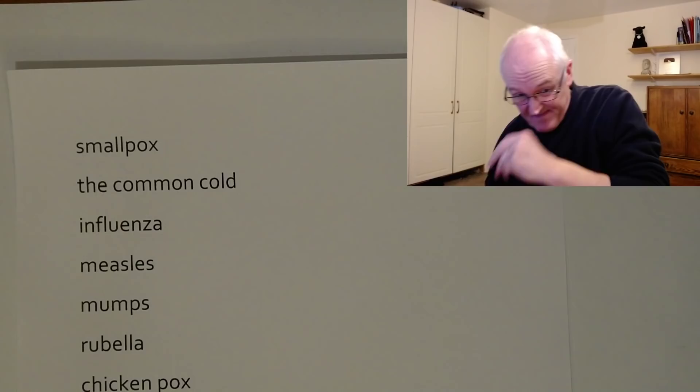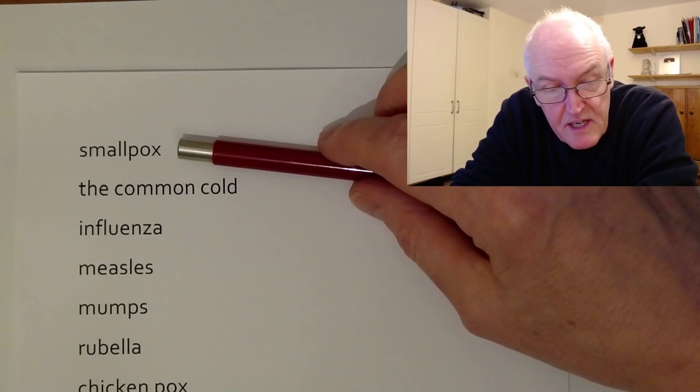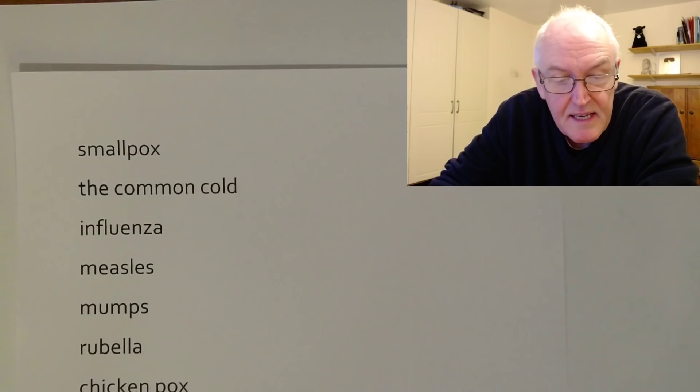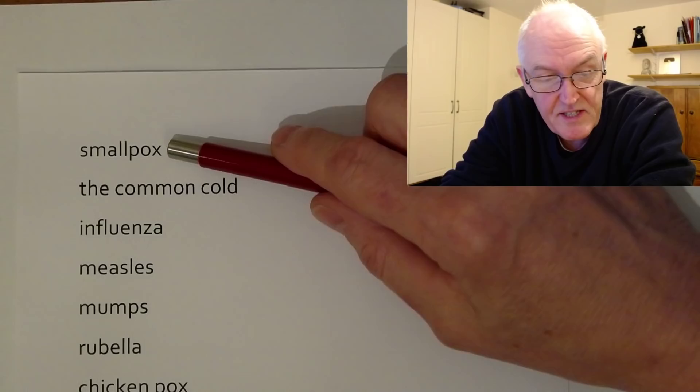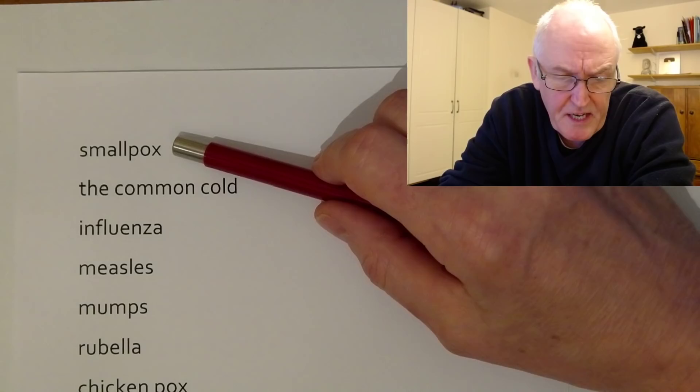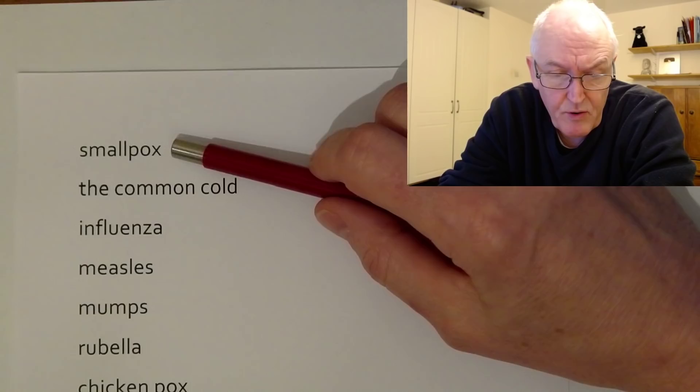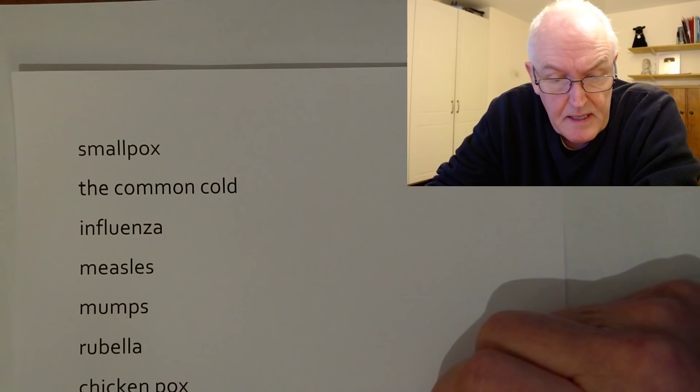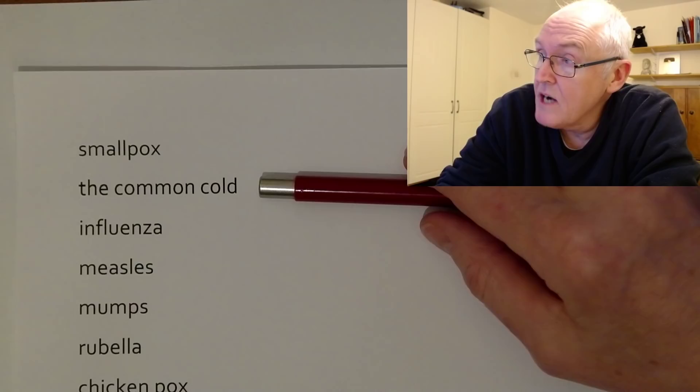Here are some other viral diseases. Smallpox — famously vaccinated against by Edward Jenner. It devastated the populations of South America and North America when Europeans first arrived. Quite an appalling virus, but I'm delighted to say it has been eradicated from the world by a very effective vaccination campaign.